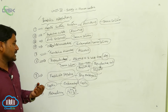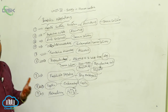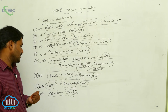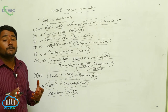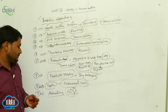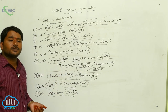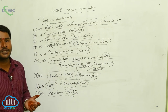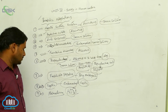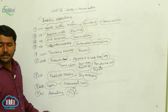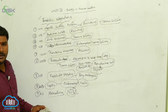Parasites have an enormous reproductive ability. Ascaris lays 2 lakh eggs per day. Taenia solium has 700 to 900 proglottids, each being a reproductive unit producing 30,000 to 35,000 eggs. Some parasites have complex life cycles using two hosts, exhibit polyembryony, undergo cystic stages, and constantly change their forms to escape host immune responses.